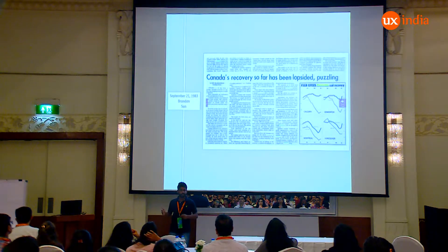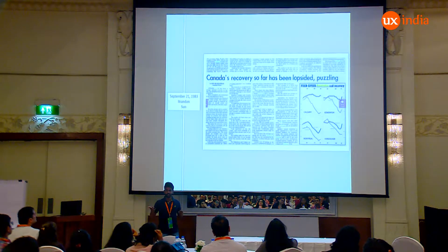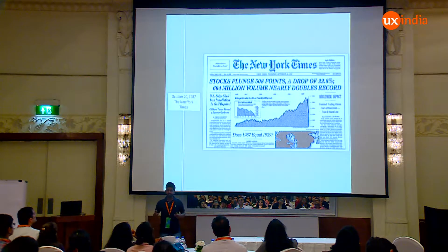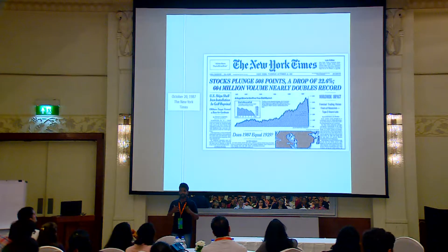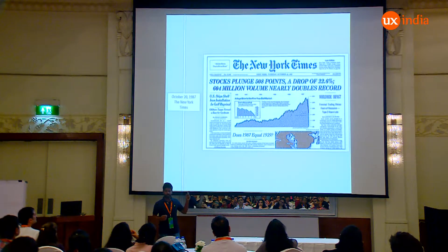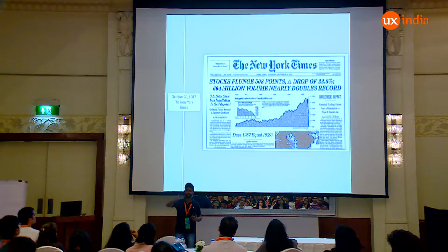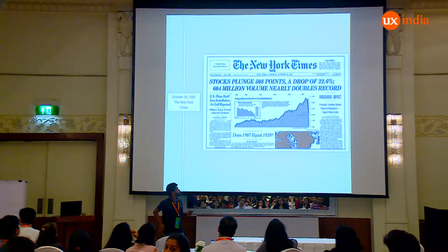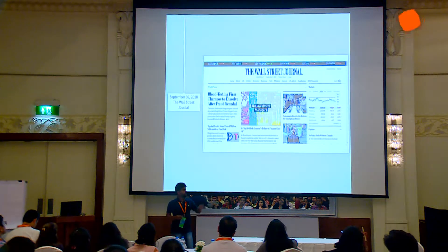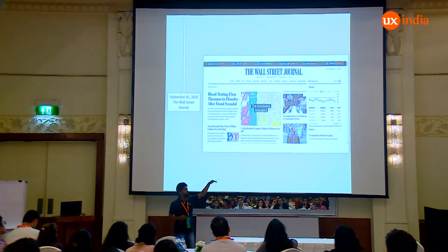Around 50 years later there was another economic crisis in the early 1980s, and again line charts were used to depict the current scenario in different cities in Canada. A few years later we had another crisis known as Black Monday. This was the front page of the New York Times, and again a line chart showed the rise and the sudden drop in the stock market. While making this presentation, I opened a new tab and went to the Wall Street Journal, and over here on the right there is again a line chart depicting the Asian stock market.